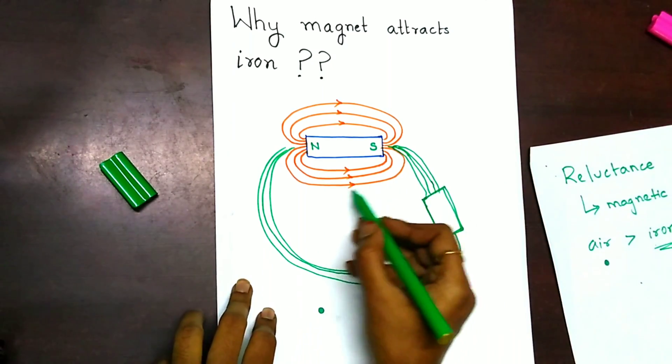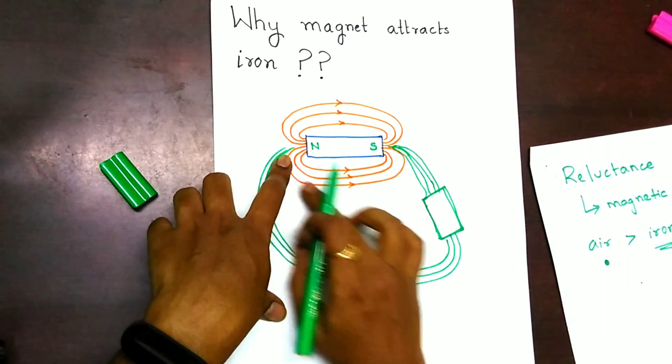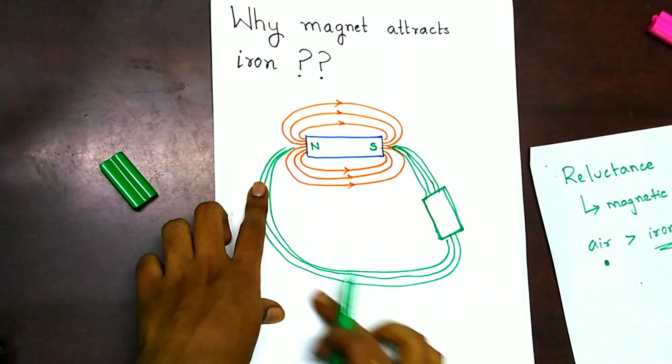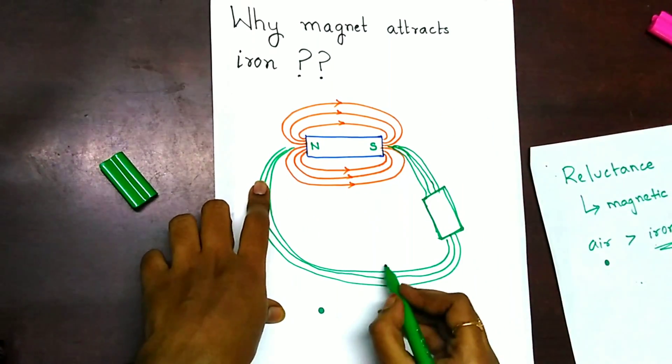Here you can observe that the magnetic lines of force, now instead of going through the air, now pass through the iron piece like this.